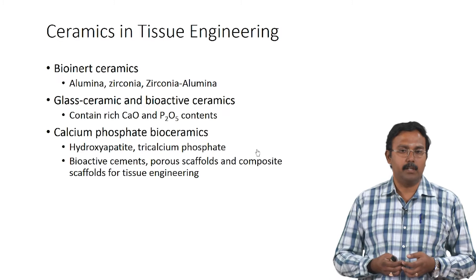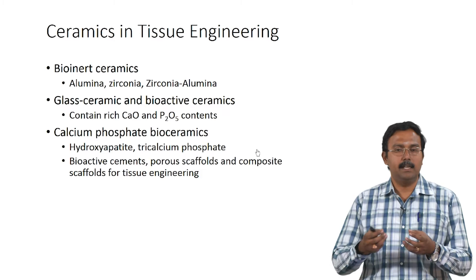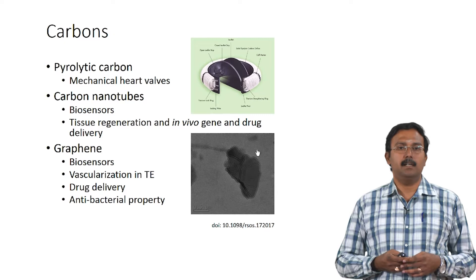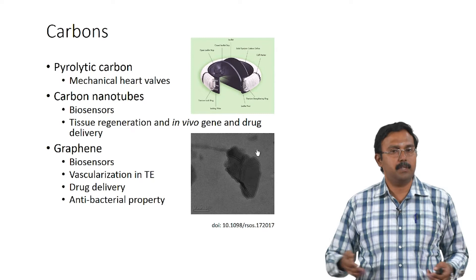People try to emulate what is seen in the body by using polymers along with ceramics to create bone-like tissues. People are also using bioactive cements, porous scaffolds, and composite scaffolds for tissue engineering. You can tailor the degradation rates by using different types of tricalcium phosphates.